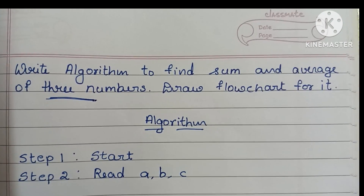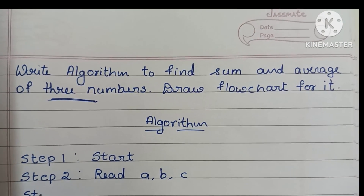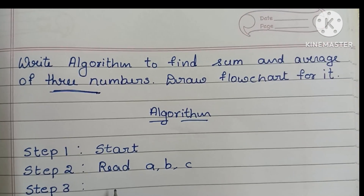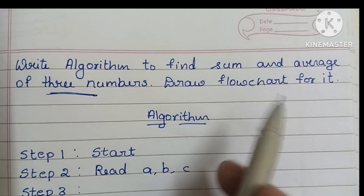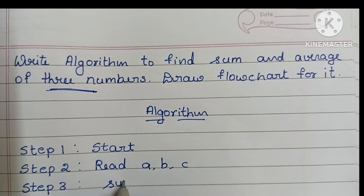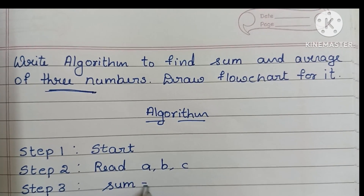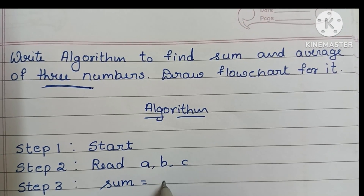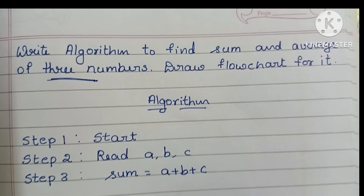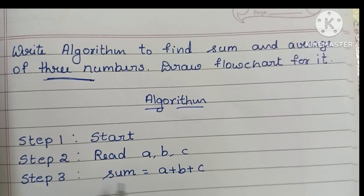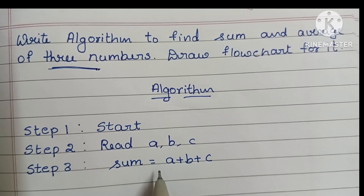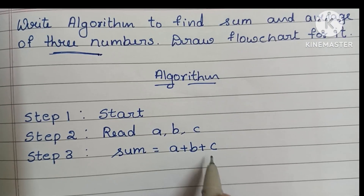In step three, we start the calculation. First we have to find the sum. Sum is equal to a plus b plus c. This is the formula to find the sum of three numbers: sum = a + b + c.